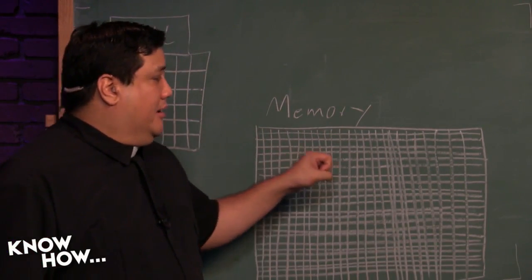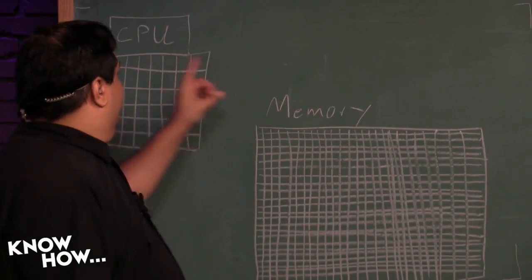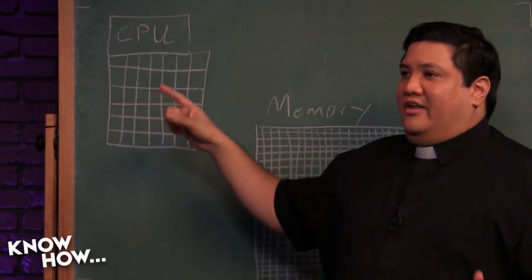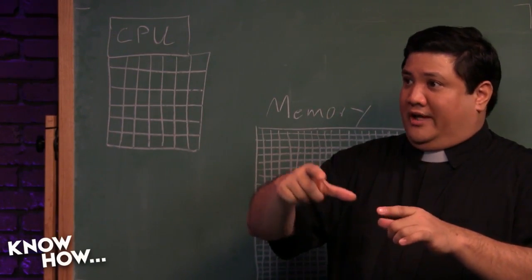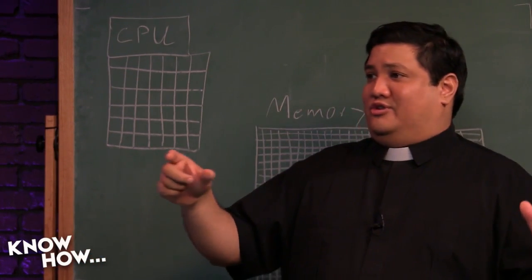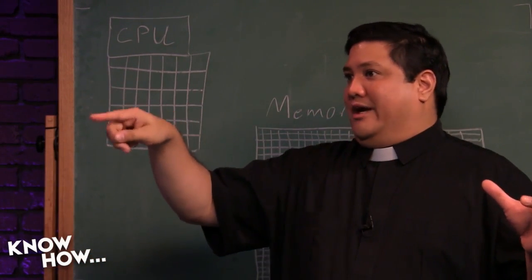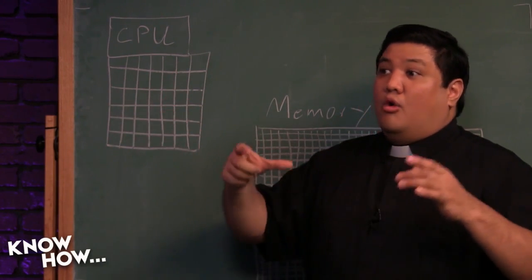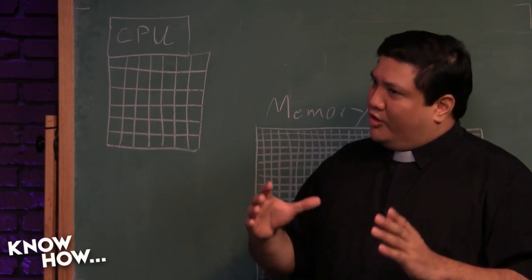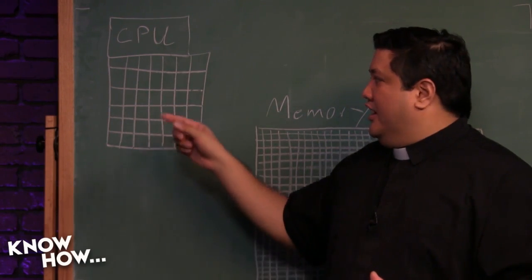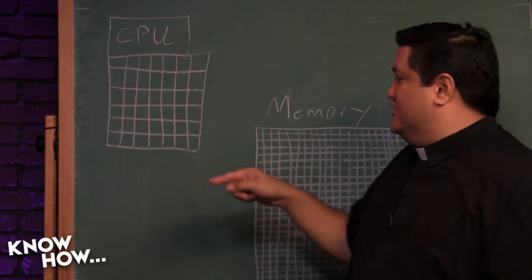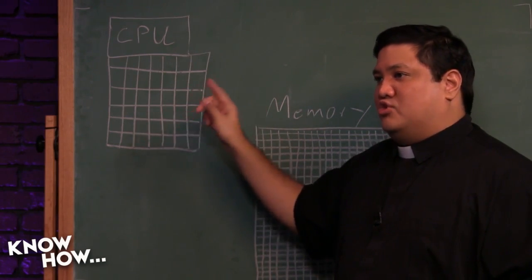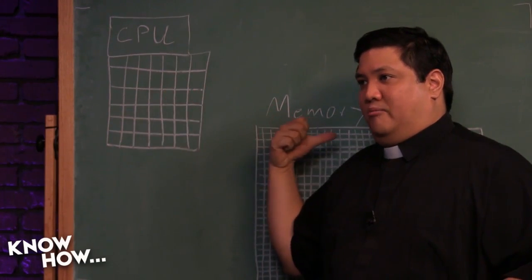The CPU cache — for anyone who's played with hardware — is the memory that's on-board. So if I buy an i7 at 3.9 GHz with 2 or 3 megabytes, that's the cache: memory built into the processor die, ridiculously fast. Because it's on the same die as the processor it doesn't have to go through the bus like main memory does, so it's exponentially faster to draw instructions from the CPU cache than from main memory.